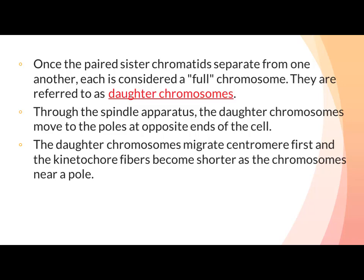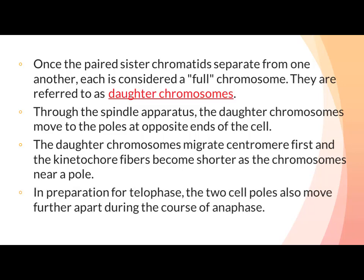The daughter chromosomes migrate centromere first and the kinetochore fibers become shorter as the chromosomes near a pole۔ In preparation for telophase the two cell poles also move further apart۔ جب daughter chromosomes pole کی طرف migrate کرتے ہیں تو ان کا centromere آگے ہوتا ہے اور chromosome کے arms پیچھے ہوتے ہیں، جس سے chromosome کی shape انگریزی letter V یا U کی طرح ہوتی ہے۔ Cell کے poles مزید elongate ہو جاتے ہیں تاکہ cell کا size increase ہو۔